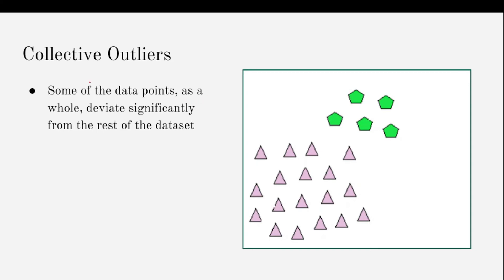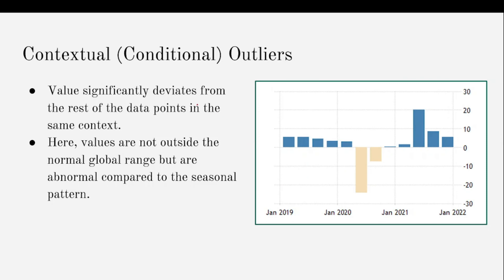Then we have the collective outliers. Collective outliers are the outliers for which some of the data points as a whole deviate significantly from rest of the data set. As we can see, most of the data points lie within a single cluster, but there are few points which lie away from this cluster, lying close to each other forming a separate cluster. This forms the collective outlier.